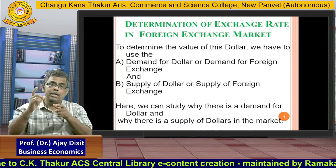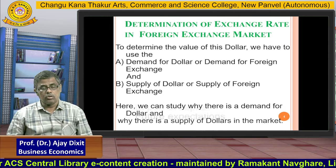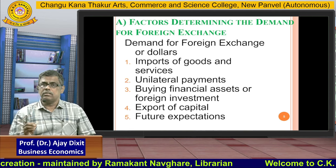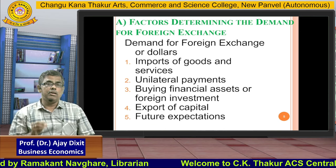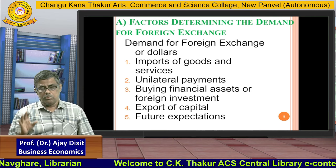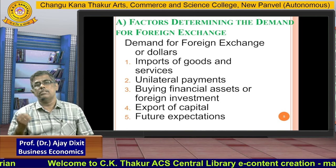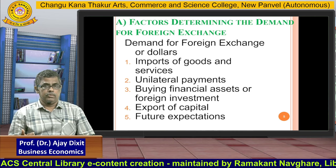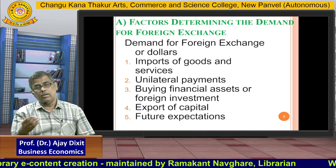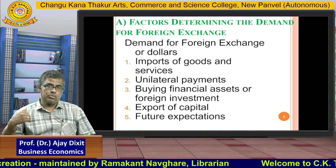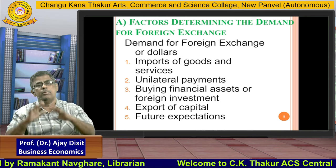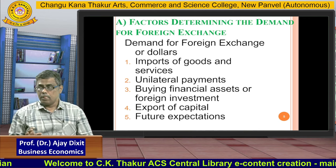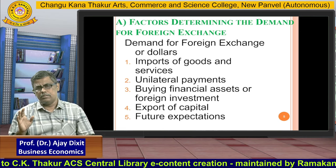Supply and demand ultimately determine the price of the dollar. First, we look at the factors that determine the demand for foreign exchange. The first factor is imports of goods and services. If we want to import goods and services from China, Pakistan, America, or England, we first have to pay in dollars. Without payment in dollars, we cannot obtain those goods and services. So to purchase goods and services from other countries, we must first purchase dollars, thereby creating demand for dollars.